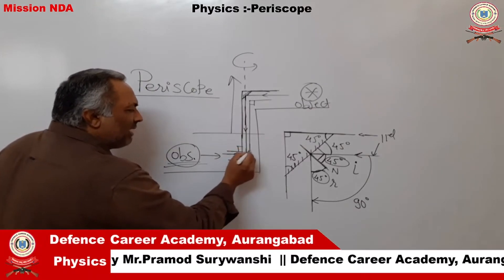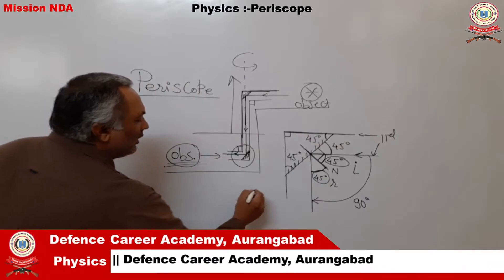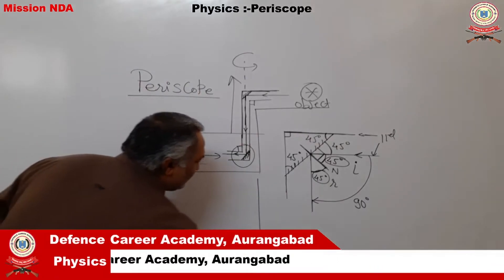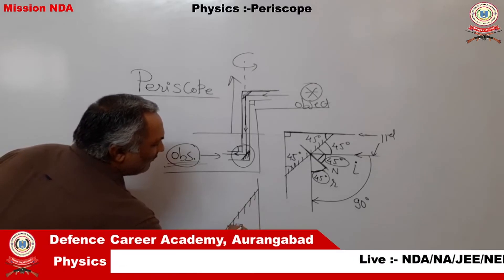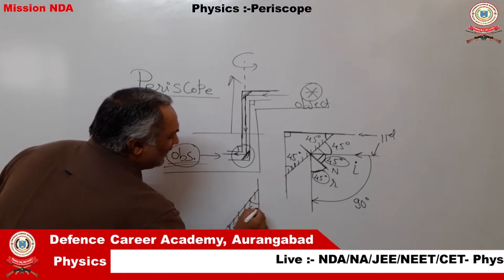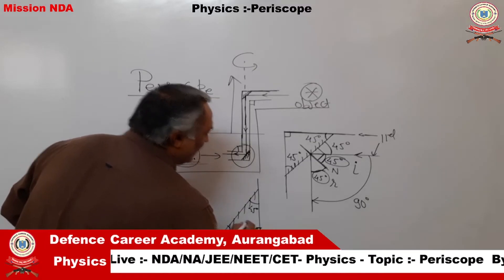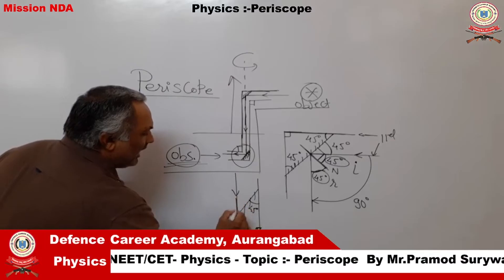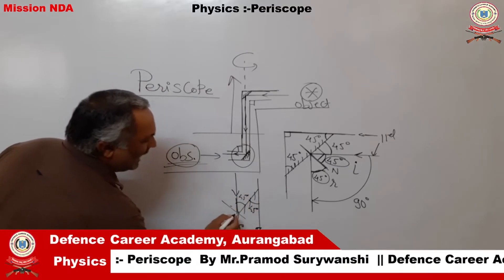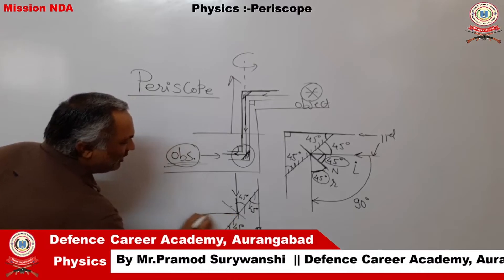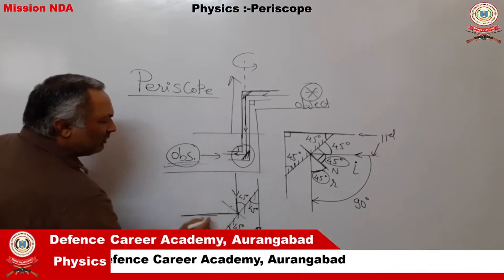The remaining job is done by the second mirror, which is also mounted in exactly the same way. At this corner, the mirror is again mounted at an angle of 45 degrees, forming a right-angled isosceles triangle. The ray coming in has an angle of incidence of 45 degrees; the normal is drawn, and the angle of reflection is also 45 degrees, so the ray emerges parallel to the base tube again.